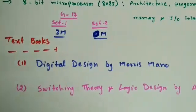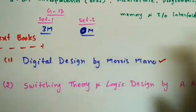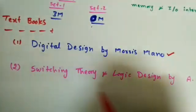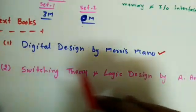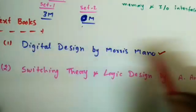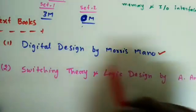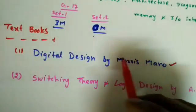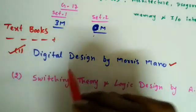The recommended textbooks are: first, Digital Design by Morris Mano (third or fourth edition), which is the standard textbook. Second, Switching Theory and Logic Design by A. Ananda Kumar, which contains many solved and unsolved problems. Do all the numerical problems in both books. My preference is to start with Morris Mano, and if any concept is missing, refer to Ananda Kumar.